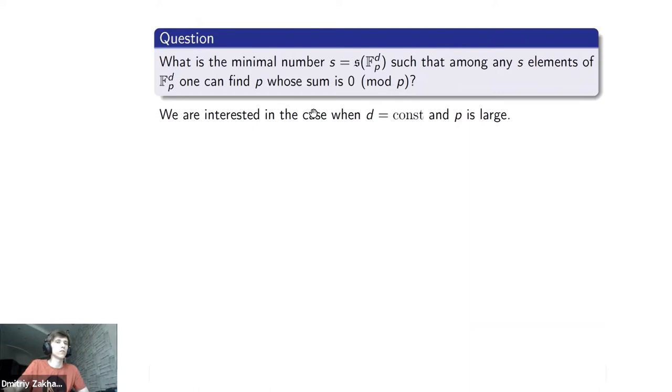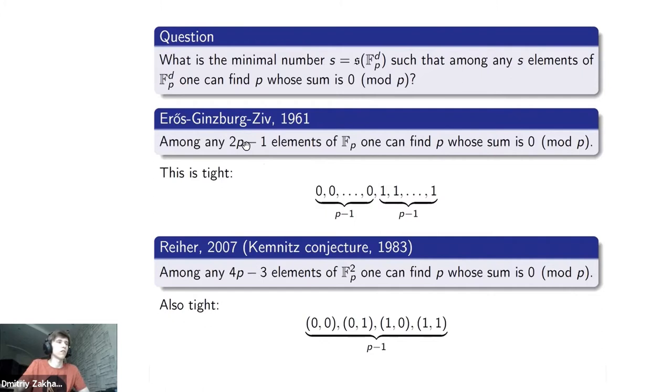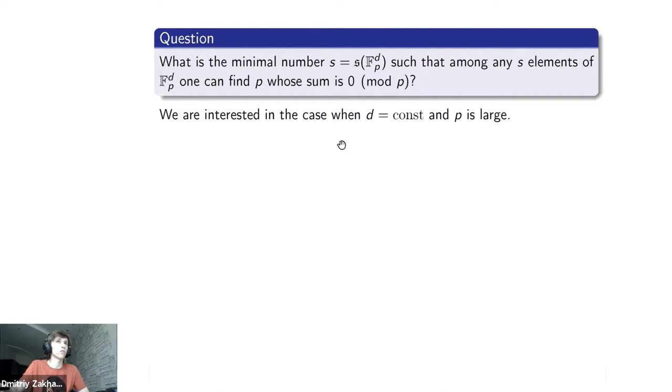Now I go to the general case. We will be interested in the case when the dimension of our space is fixed, it's a constant, and p is a large prime number. As we saw in these examples, the answer to these problems in dimension 1 and 2 is linear function in p, and it turns out to be the case in general. We of course have a trivial lower bound: s of fpd is at least 2 to the d times (p-1) plus 1. This is exactly the example of the hypercube.